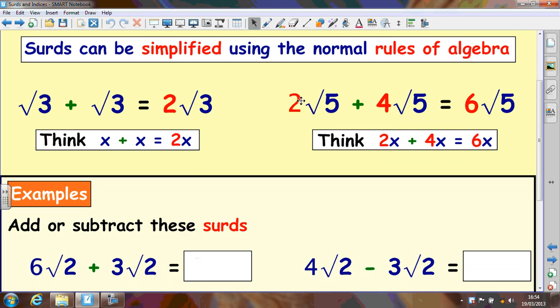Same with the next one. We've got 2 root 5 plus 4 root 5. Well that makes 6 root 5, similar to 2x plus 4x equals 6x. When we have surds of the same value like root 3 and root 3 we can add them. If they're different we cannot. It's similar to x plus y. You cannot simplify that any further because they're different. If you've got a load of x's you can add them together, but you cannot add x and y to get xy.